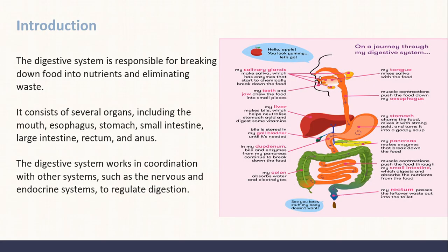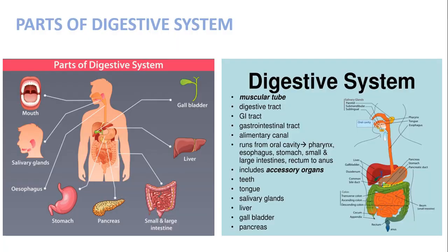Introduction about the digestive system. The digestive system is responsible for breaking down food into nutrients and eliminating waste. It consists of several organs including the mouth and esophagus, as discussed. This digestive system is also called the gastrointestinal tract,